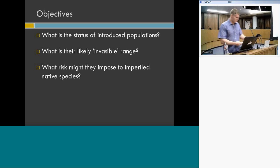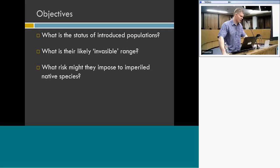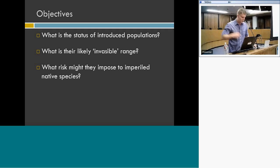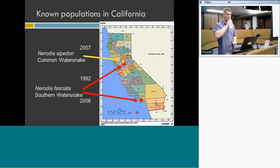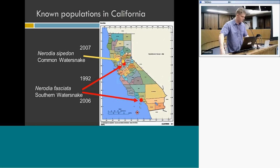The perspectives of our research over the last four years address three main questions: the status of the introduced populations of non-native water snakes here in California; modeling to get a handle on their likely invasible range throughout the North American West, and specifically California; and models to assess what risk these non-native species can pose to native species based on information about distributions here in the state.